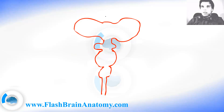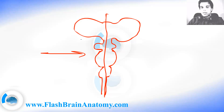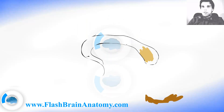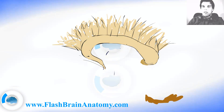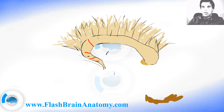If we take a completely developed brain and make a median section right here, and then look from this side, we would be able to see something that I will illustrate now step by step. First, I will illustrate the corpus callosum. This is the commissure inside of the brain, and this commissure is cut right here.